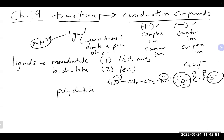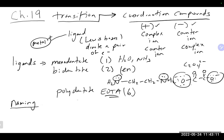There are also polydentate ligands that bind in many different places. For example, EDTA gives you six 'grabs' onto the metal per molecule, so it grabs it in a lot of different places. We also spent a good amount of time talking about naming these coordination compounds.